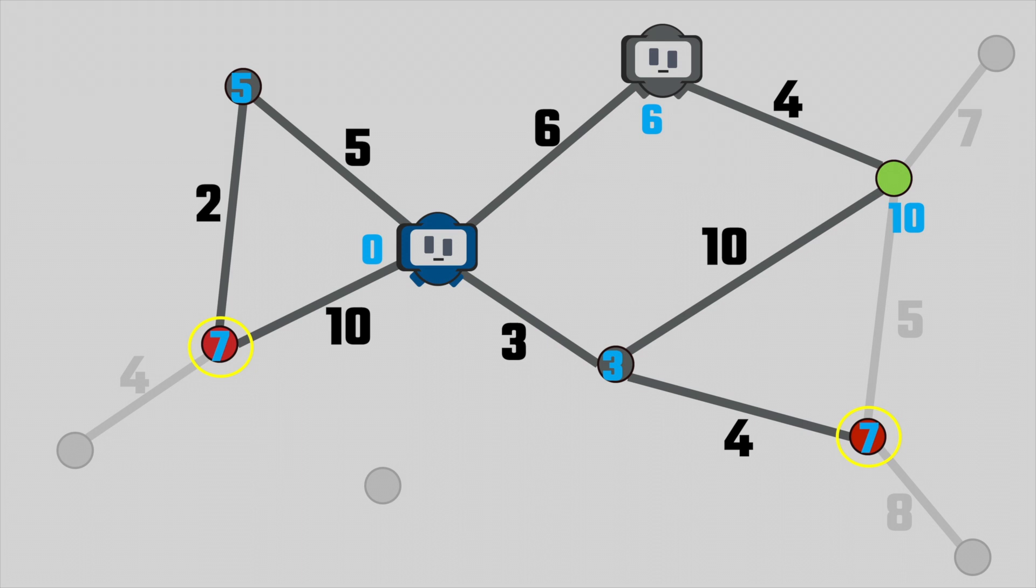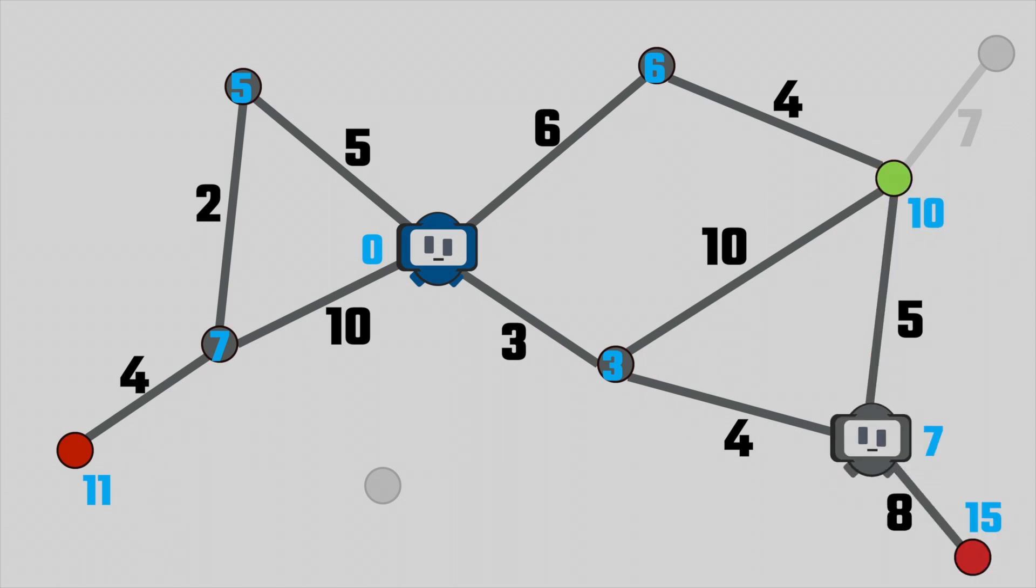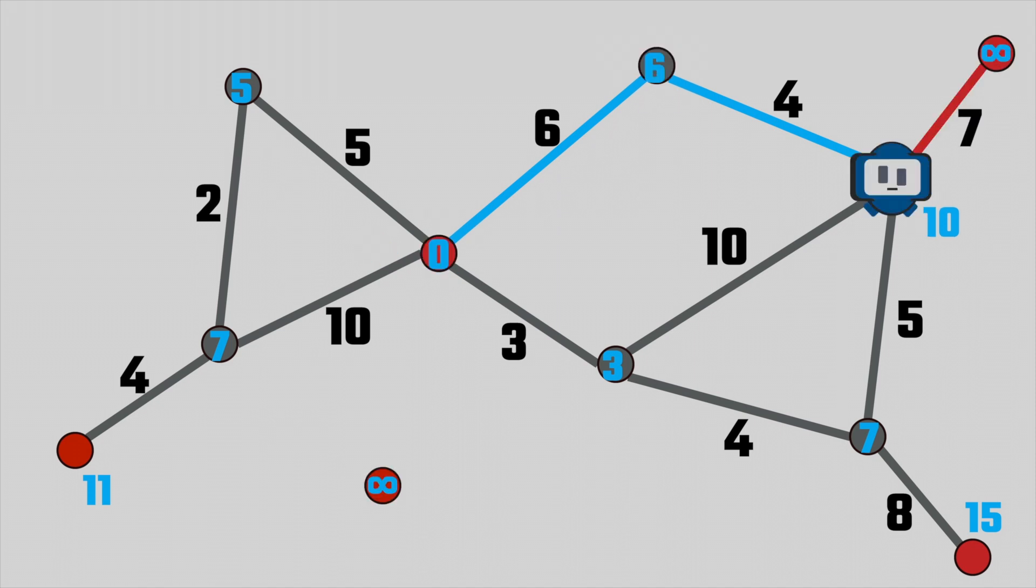When there is a tie for the smallest node, we just pick one at random. We found another path to the goal, but this one happens to be bigger than the path we already found, so we won't replace it. Now the goal node is the smallest node. Exploring things attached to the goal node wouldn't change the path we found, so we can just stop. We found the shortest path. Dijkstra will always find the shortest path so long as there aren't any negative costs.